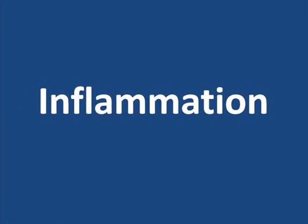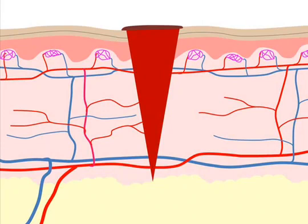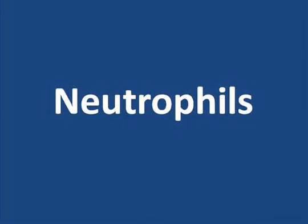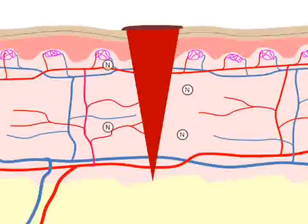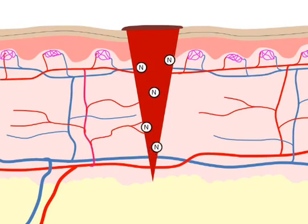The beginning of the inflammation phase is marked by the migration of white blood cells into the wound. During the first few days after the injury, the body tries to clean up the wound site. Bacteria, dirt, and damaged cells as well as other types of debris may be present in the wound. White blood cells called neutrophils migrate from the bloodstream through the tissue and into the wound, and these cells begin to engulf and digest the contaminants.